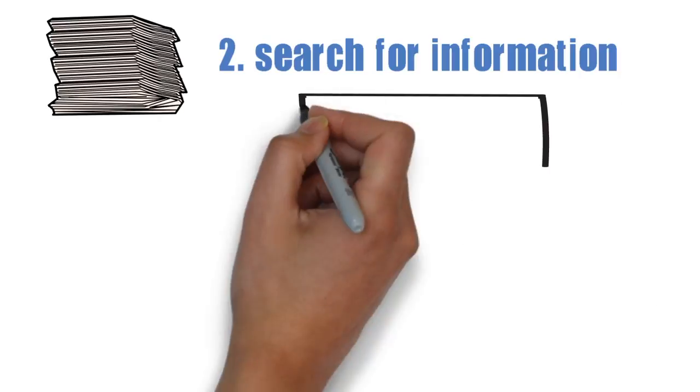This next stage of the model is information search. Once the need is recognized, consumers are likely to search for more product-related information before making a purchase decision. Individuals are involved in the process of searching for information differently depending on their knowledge about the product, their previous experience or purchases, and on external information such as feedback from others.